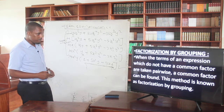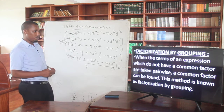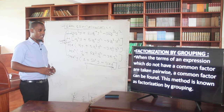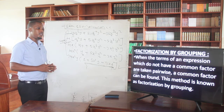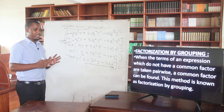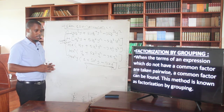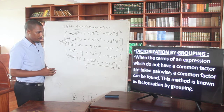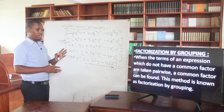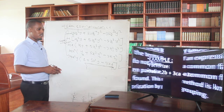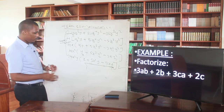In my next slide: factorization by grouping. This is what we mean: when the terms in an expression do not have a common factor overall, but are taken in pairs, a common factor can be found. This method is what we are calling factorization by grouping. My next slide is going to focus on factorization by grouping.